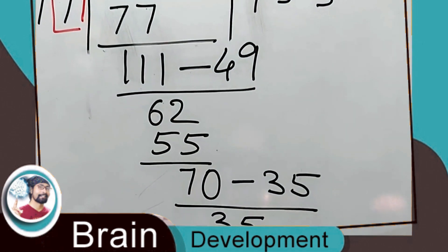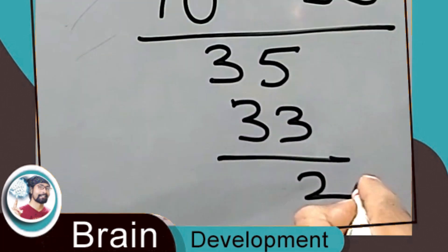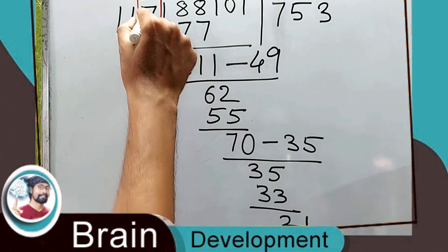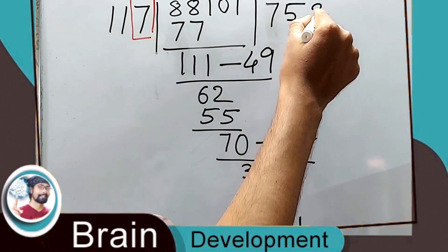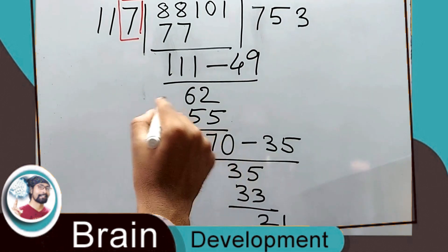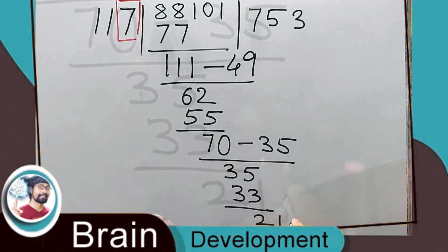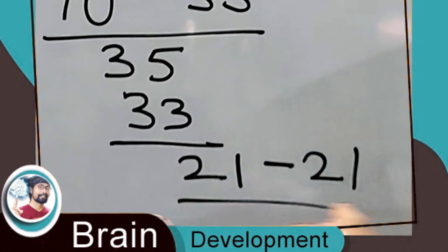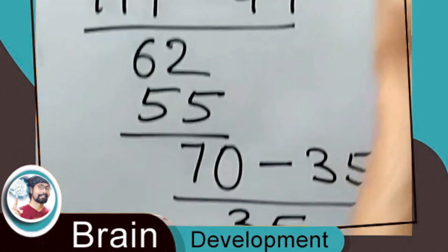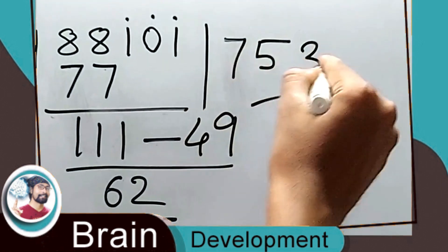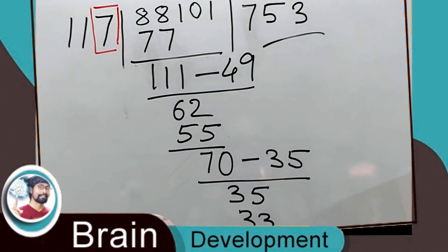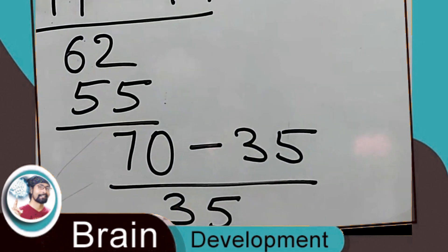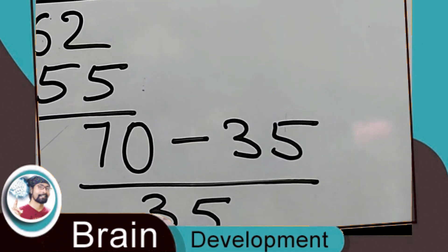This 1 comes down, making 21. Seven into three is 21, so 21 minus 21 is zero. The final answer is 753. Just practice it for a day and it will be within your grip.